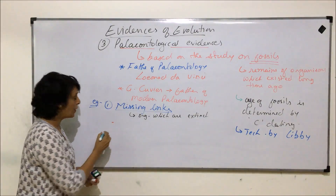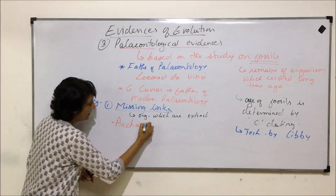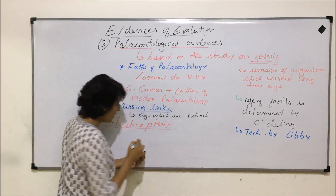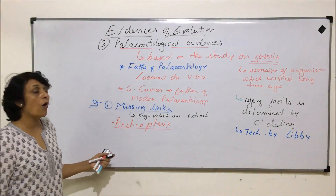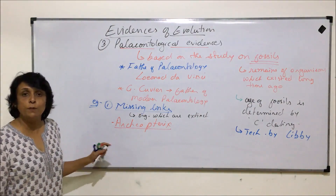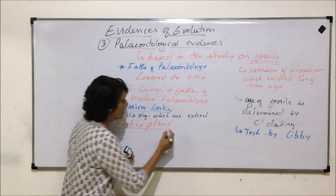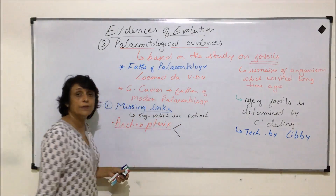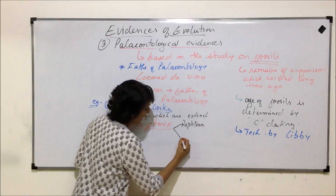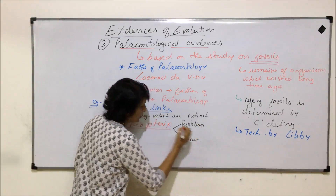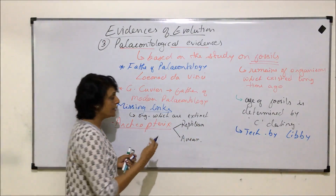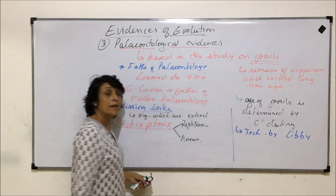The fossil of Archaeopteryx which was found was almost a complete fossil — most of the skeleton was pretty much intact. After studying this fossil, it was found that it showed the characteristic features of two groups: reptiles, showing reptilian characters, and birds, showing avian characters. It had some characteristics like birds and some like reptiles.